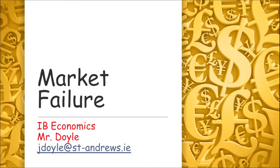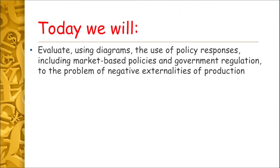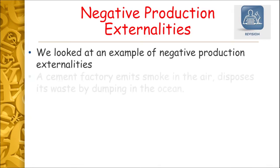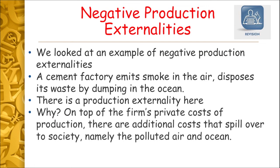Hello and you're very welcome to this video in our series on market failure for IB economics. In this video we're going to be building on the last video where we looked at negative production externalities and now we're going to be evaluating using diagrams what policy responses — market-based policies and government regulation — can be used to correct these. If you haven't watched the previous video please go back and watch that now.